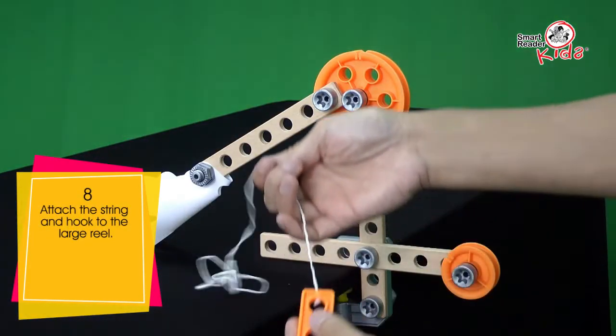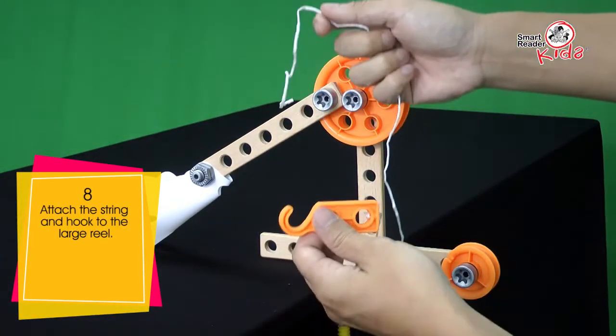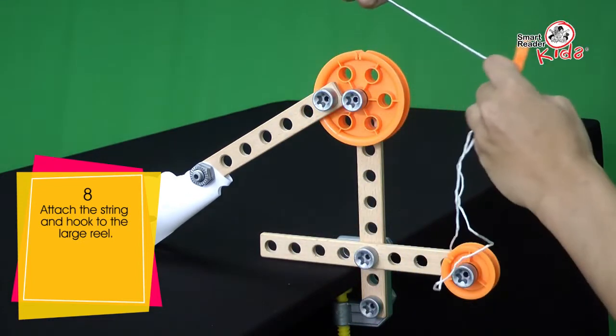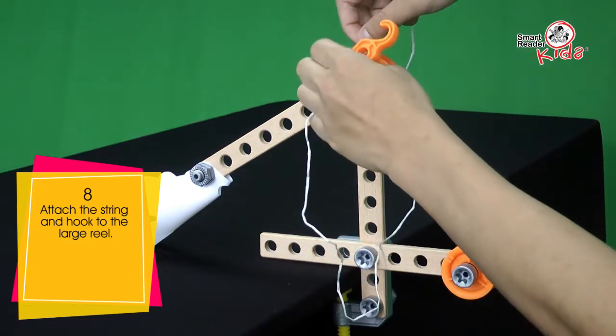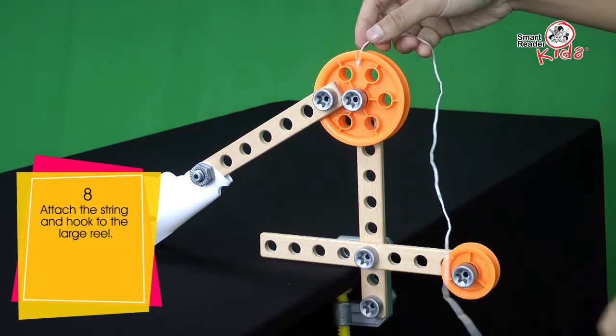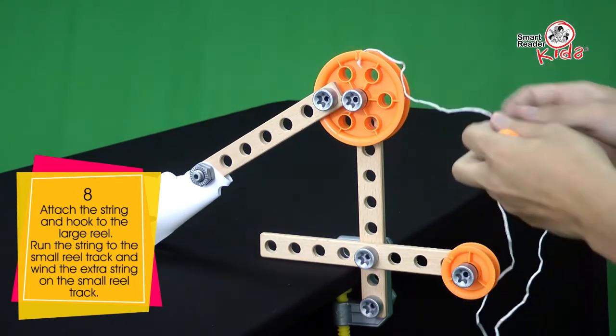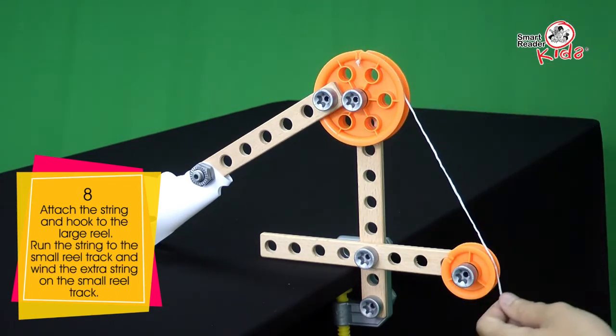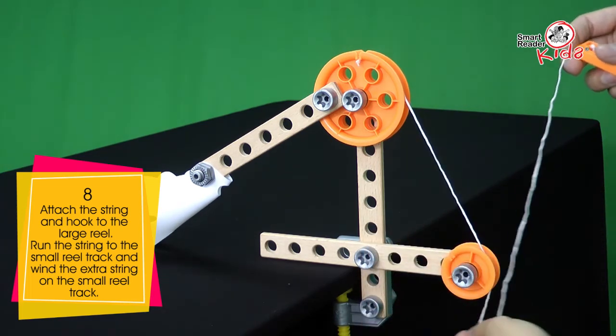Attach the string and hook to the large reel. Run the string to the small reel track and wind the extra string on the small reel track.